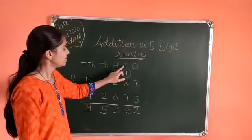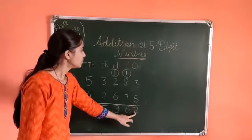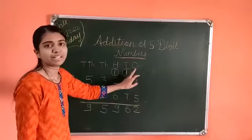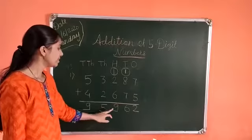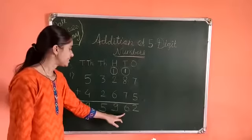6 is on 10th place. 2 is on 1's place. So, the number is 95,962.